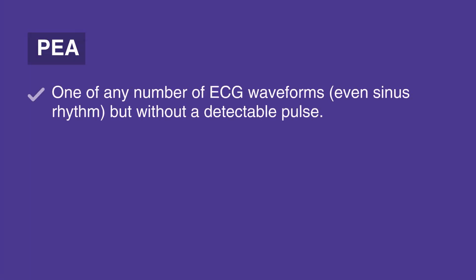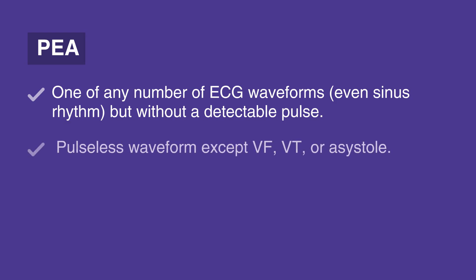PEA is one of any number of ECG waveforms, even sinus rhythm, but without a detectable pulse. PEA may include any pulseless waveform except VF, VT, or asystole.